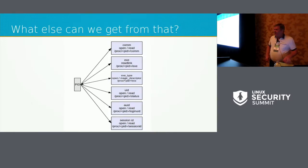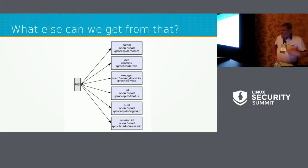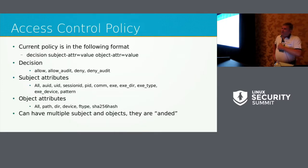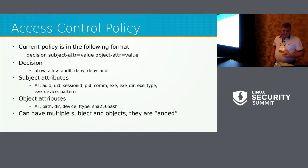We can also get information about the subject by looking at the PID. We can go into the proc filesystem and pull out the command name, the executable, figure out its type by passing that into libmagic, and also determine the UID, login UID, and session ID from the proc filesystem. With these primitives and attributes, we can start to fashion a policy with a decision, some statements about the subject, and some statements about the object.